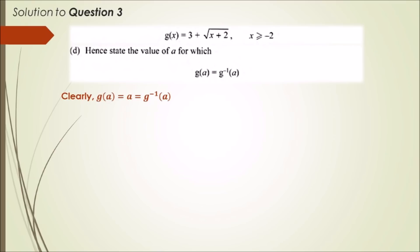That means g(a) equals a, which also equals inverse a. In fact, all three equal each other. If that's the case, that means all these functions must equal a, and from the previous solution we found that g(x) equals x, and x was 7 plus root 21 over 2. So clearly a equals 7 plus root 21 over 2.